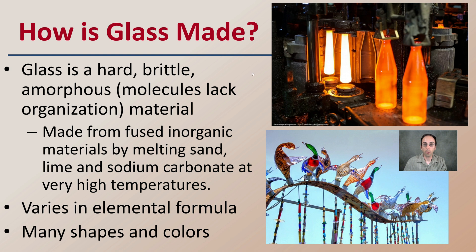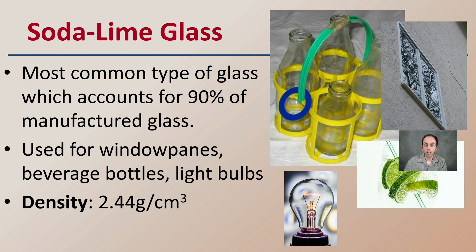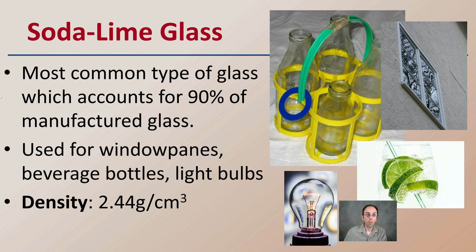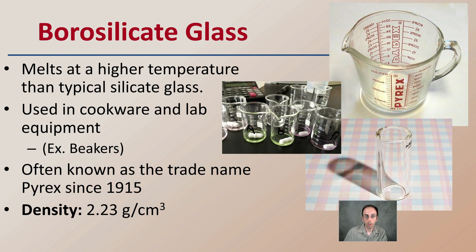Here's the manufacturing process as well. Soda lime glass is the most common type of glass, accounting for 90% of manufactured glass. So if you're finding this type at a crime scene, you may not be the best at getting into something very specific, but it can still provide other valuable trace evidence by linking someone to a crime scene. It's found in window panes, beverage bottles, and light bulbs, and has a density of 2.44 grams per cubic centimeter.